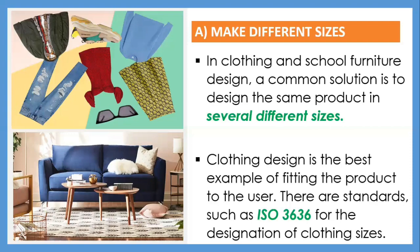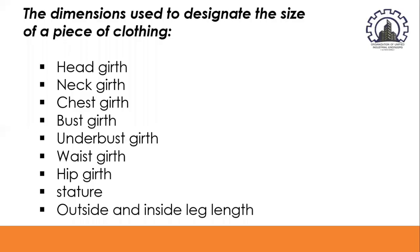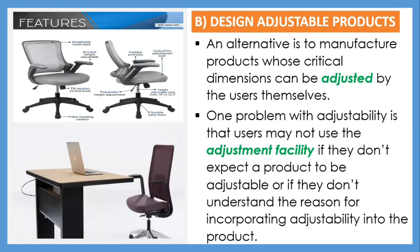Clothing design is the best example of fitting the product to the user. There are standards such as ISO 3636 for the designation of clothing sizes, though it is left to the manufacturer to decide what sizes to make, often through trial and error rather than by carrying out an anthropometric survey. Dimensions used to designate clothing size include head girth, neck girth, chest girth, bust girth, underbust girth, waist girth, hip girth, stature, and outside and inside leg length.